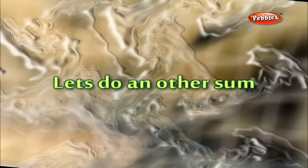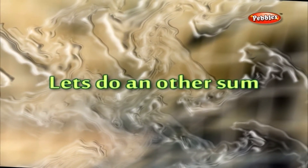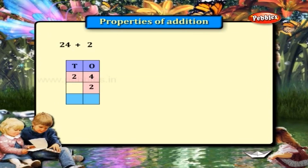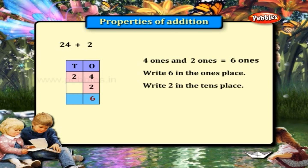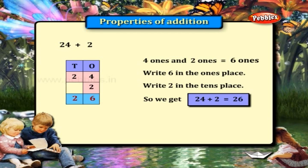Let us do another sum. 24 plus 2. We have 4 ones and 2 ones, so it is equal to 6 ones. Write 6 in the ones place. Write 2 in the tens place. So we get 24 plus 2 is equal to 26.